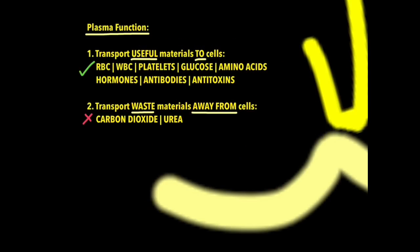So finally, let's look at the plasma. Plasma is the watery, yellow, pale, fluid part of blood, and it's useful for two things. Firstly, transporting useful materials to cells, such as red blood cells which carry oxygen, white blood cells which fight disease, platelets which help us clot our blood, glucose, amino acids, hormones, antibodies, and antitoxins. They also transport waste materials which are made from cells away from cells, such as carbon dioxide and urea.